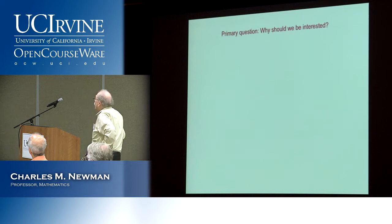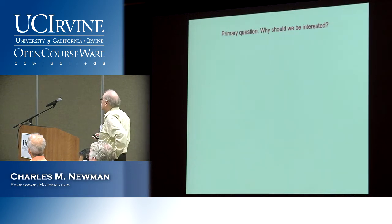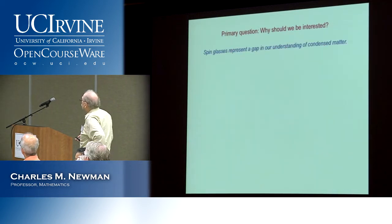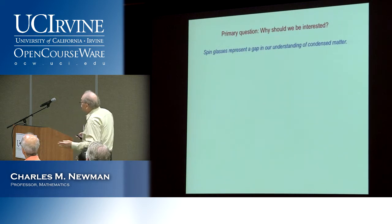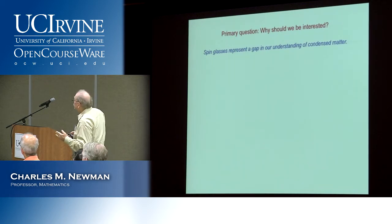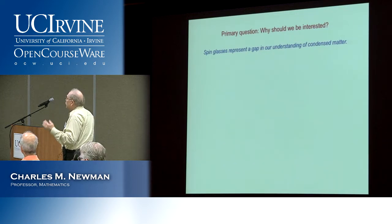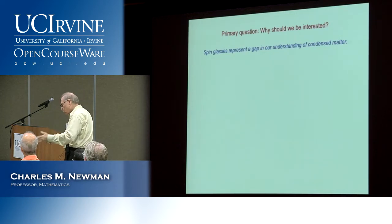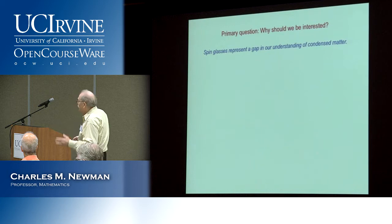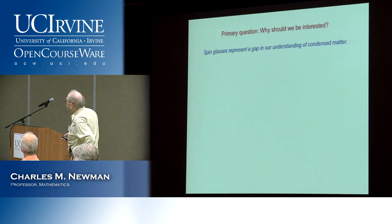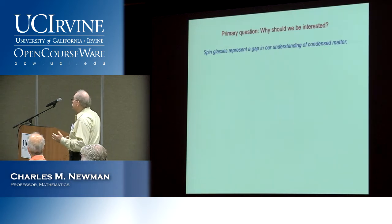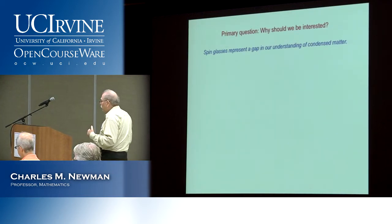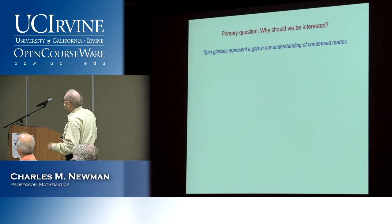Why should we be interested in such a thing? If you're a condensed matter physicist or material scientist, real laboratory spin glasses — which are magnetic alloys — represent a gap in our understanding. Most of the methods developed in condensed matter physics were developed for homogeneous non-disordered systems. A question from condensed matter physics that came up in the 18th century but was only really understood in the last century: why are solids actually rigid? If they're made up of all these molecules, how come they move like one object?